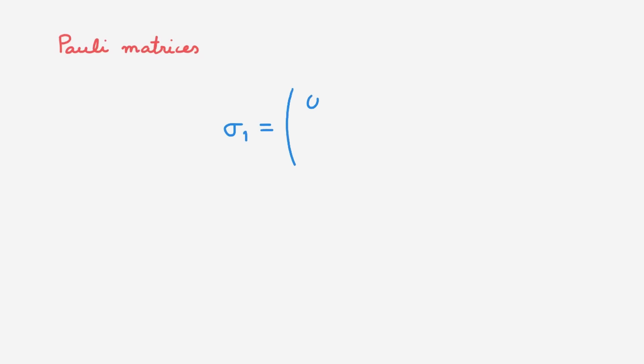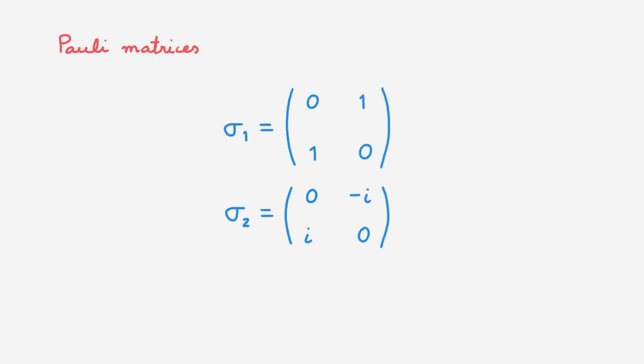Let's go straight to the definition of the Pauli matrices. They are usually labelled with the Greek letter sigma. The first one is sigma 1 with entries 0, 1, 1, 0. The second one is sigma 2 with entries 0, -i, i, 0. And the third one is sigma 3 with entries 1, 0, 0, -1.